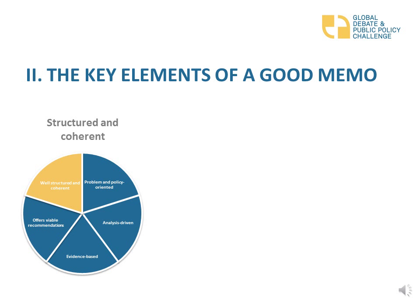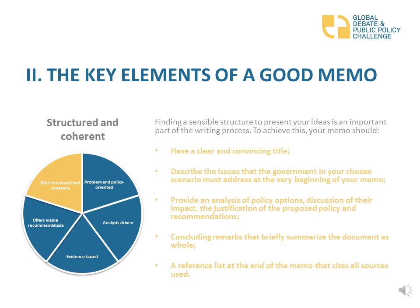Make sure you have a well-structured and coherent memo. Finding a sensible structure to present your ideas is an important part of the writing process. You need to guide your target audience through the paper by making sure all sections and arguments are well-structured, logically developed, and focused on the topic. To achieve this, your memo should have a clear and convincing title that communicates your key message and the need for change — usually ten words or less is ideal.